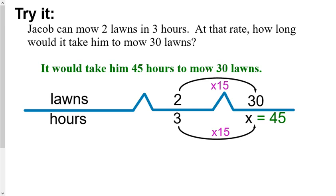If you solved this correctly, you should have gotten that it would take him 45 hours to mow 30 lawns. This one was pretty simple to solve using a scale factor of 15. This one was just comparing lawns and hours, so there was nothing to do with part-to-whole in this particular question.